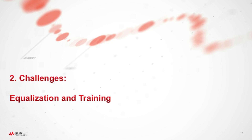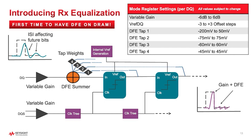Moving on to section two: equalization and training. For the first time, we will have decision feedback equalization on the DRAM. You can see in the top left-hand side the bit that we want to transmit — that's the nice square wave. But what we actually get after our channel is something that looks very different. You can see how some of our signal energy is delayed and will affect future bits. That's what we call inter-symbol interference. But after gain and decision feedback equalization has been applied, you can see in the bottom right-hand side our pulse looks much better — it has much better signal quality.